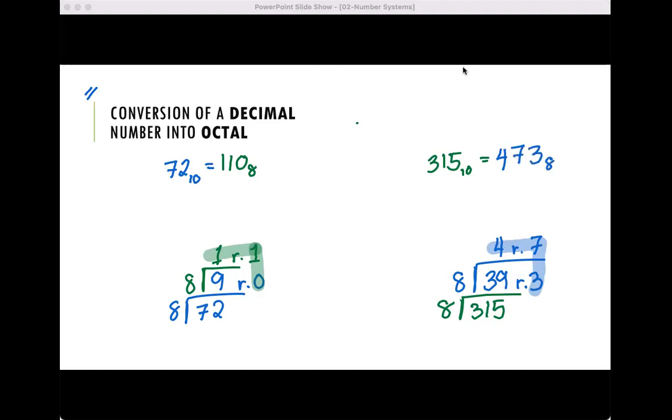But what if we want to convert this back to its decimal value? How will we do that? To solve that, let's focus on these three digits: 0, 1, and 1. This one, I will multiply by 8 to the 0. This one, I will multiply by 8 to the 1. And this one, I will multiply by 8 squared. And after that, I will add them.